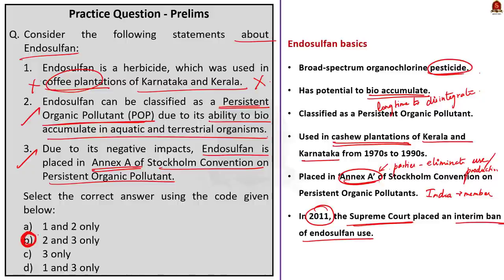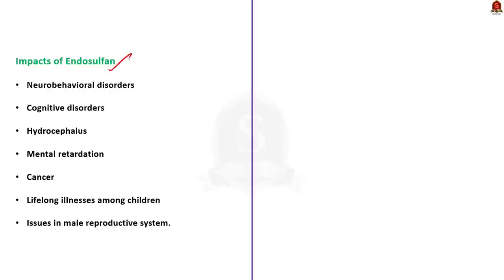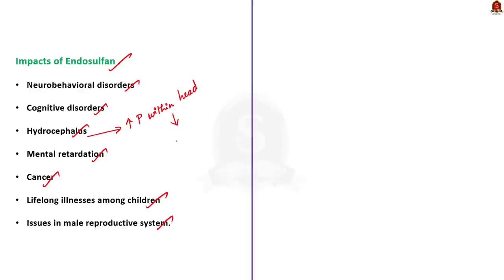Apart from these facts, you should also know the impacts of endosulfan. Endosulfan exposure mainly results in neurobehavioral disorders, cognitive disorders, hydrocephalus, mental retardation, cancer, lifelong illness among children, and abnormalities related to the male reproductive system. Hydrocephalus is a condition that increases pressure within the head, making it grow to an abnormal size, sometimes leading to brain damage and death.